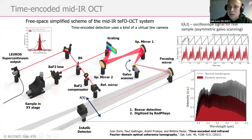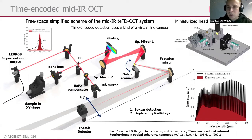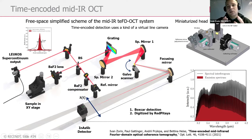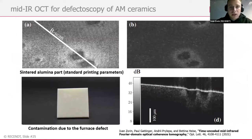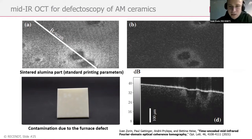Recently the system has been miniaturized. The measurement head, which combines the interferometer, focusing optics, and reference arm, was placed on a plate of around 12×16 cm, enclosed in a box connected to the source by an infrared optical fiber and the detection part by another infrared optical fiber. This is something already miniature which can be integrated or used in more field conditions. This system was used primarily for defectoscopy of ceramics, and the technical details can be found in a publication from last year.